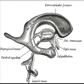Hi, I'm Dr. Dave. The lateral ventricles are part of the ventricular system of the brain. Classified as part of the telencephalon, they are the largest of the ventricles.